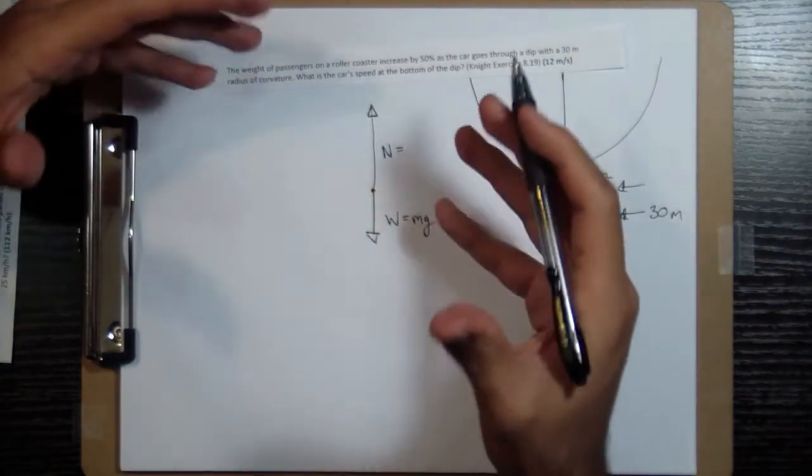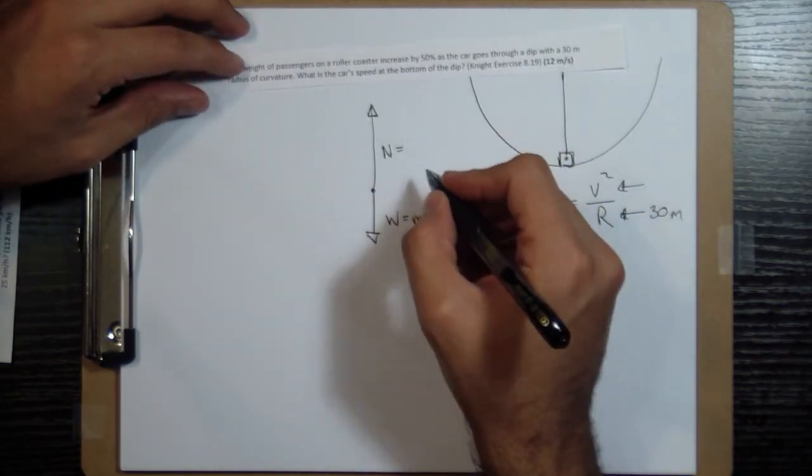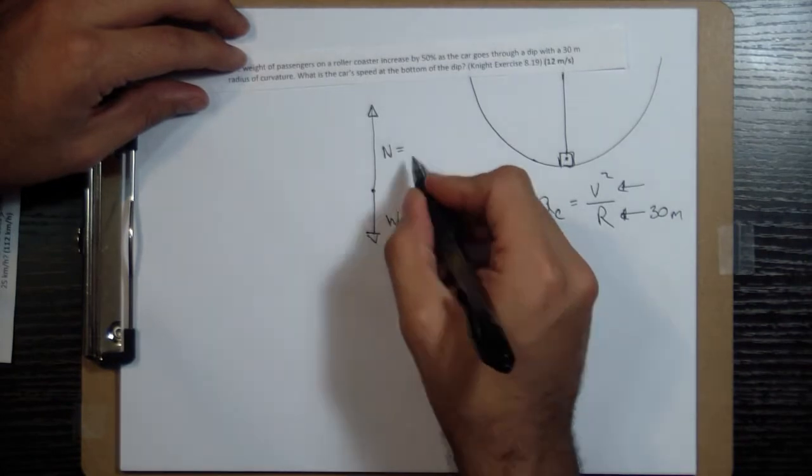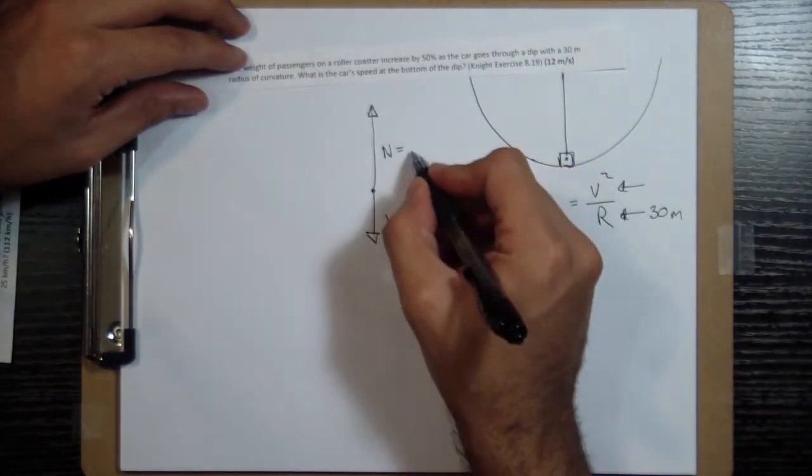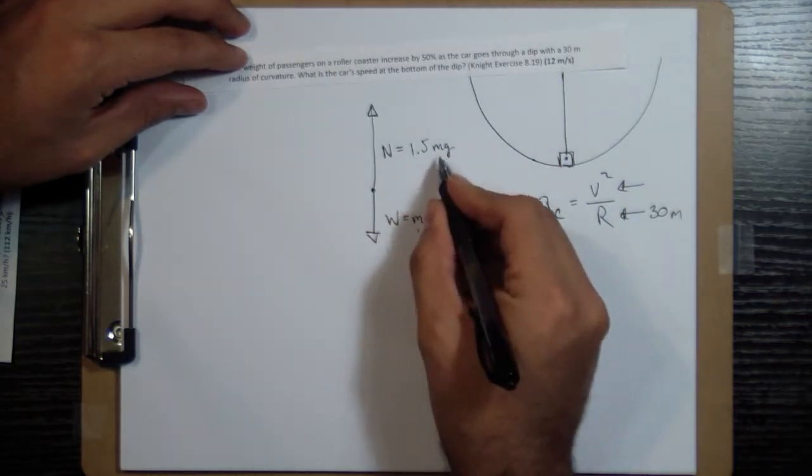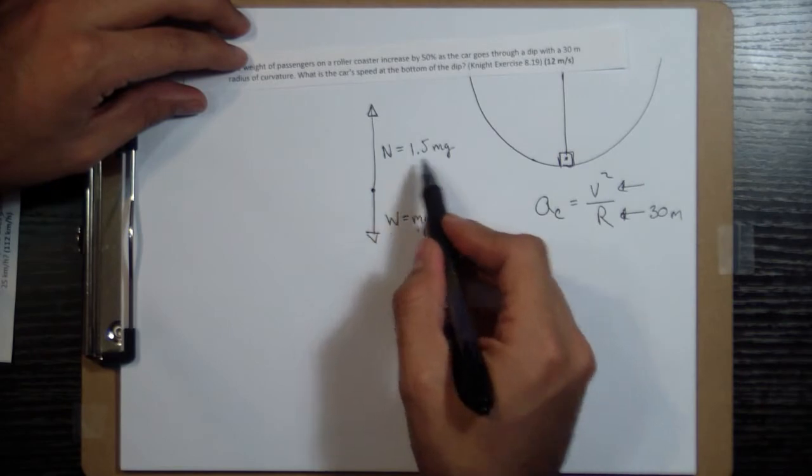And then what you really feel as your weight is how much you get pushed on, which is going to be the normal force. So really, when you feel your weight, this is what you feel. And that's going to be 50% more than this. So 50% more is going to be 1.5 times mg. One for the original amount and then 50% more.